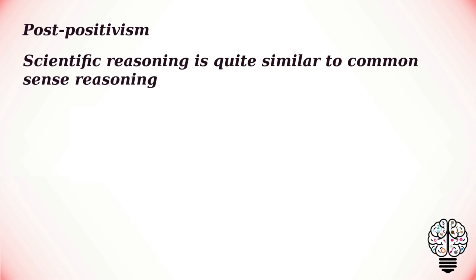Post-positivism came about in the 20th century. Post-positivism was not just a revision of positivism but a complete rejection of its core values. Post-positivism points out that scientific reasoning is quite similar to our common sense reasoning; the only difference is that a scientist would use a procedure in order to arrive at conclusions, unlike a lay person.